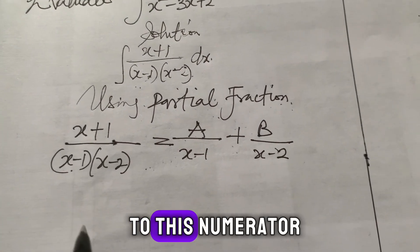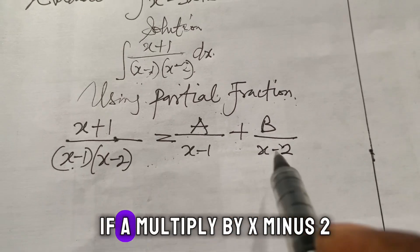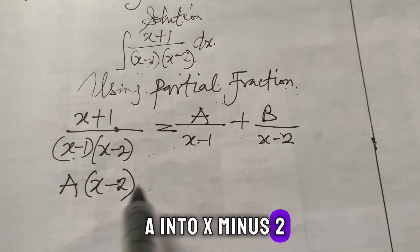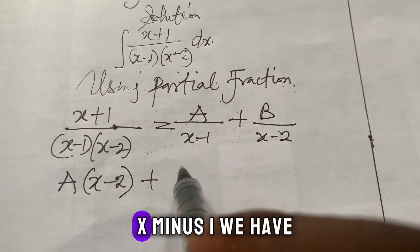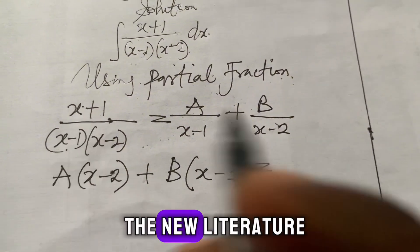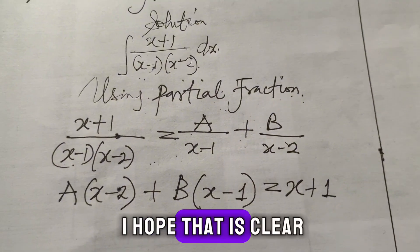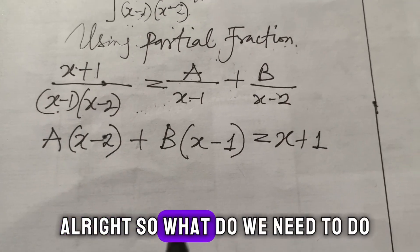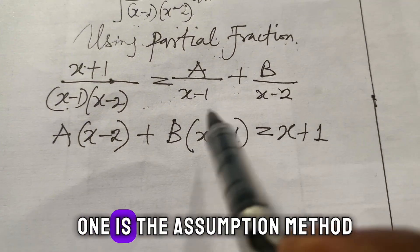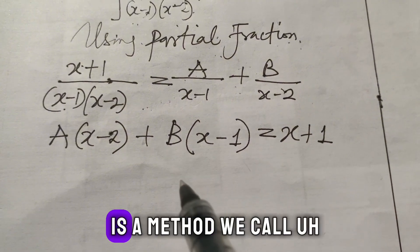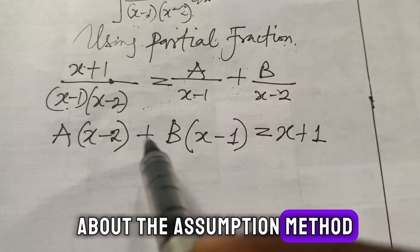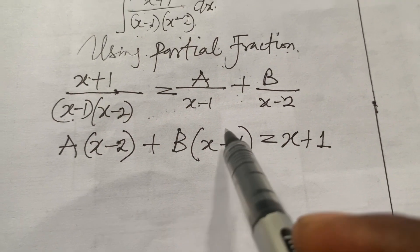So we get: A(x − 2) + B(x − 1) = x + 1. We have two methods when resolving into partial fractions: the assumption method and equating of coefficients. Using the assumption method, to eliminate B we substitute a value of x that makes the B term zero.